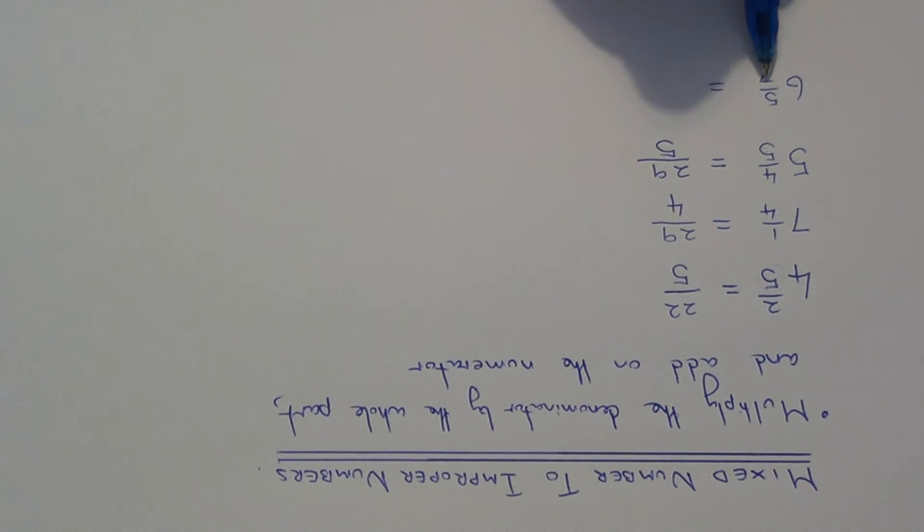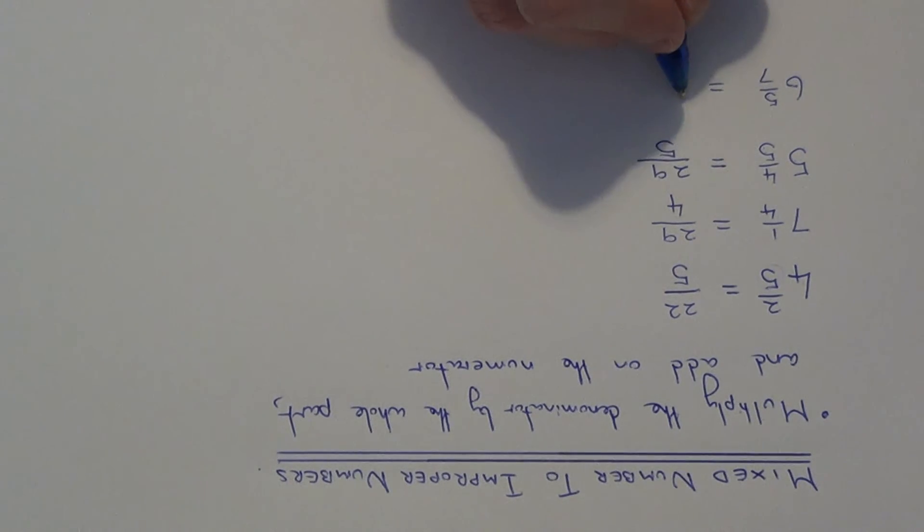So again, multiply the denominator by the whole part. 6 times 7 is 42. Add on the numerator, which gives 47, and your denominator will stay the same as 7.